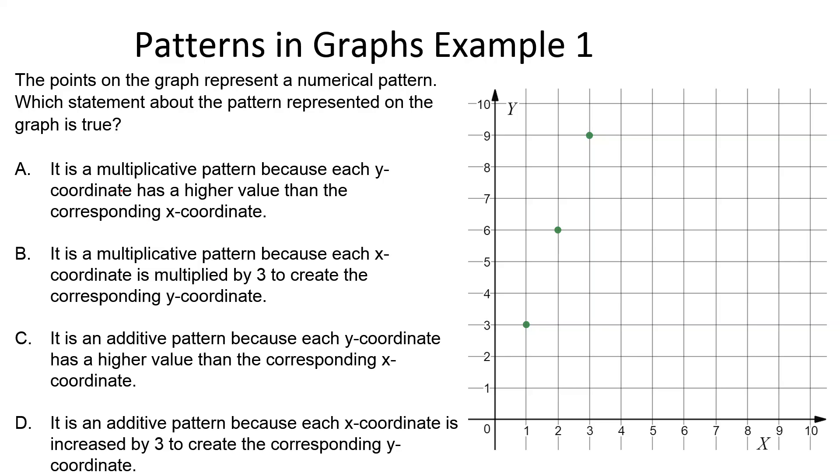Answer choice A: It is a multiplicative pattern because each y coordinate has a higher value than the corresponding x coordinate. If we look at it, all of the y values are bigger than their corresponding x values, so that one's kind of tempting. Answer choice B: It is a multiplicative pattern because each x coordinate is multiplied by 3 to create the corresponding y coordinate. We just did this, and this is absolutely the truth. We take x times 3 to get y, and we saw that on the table.